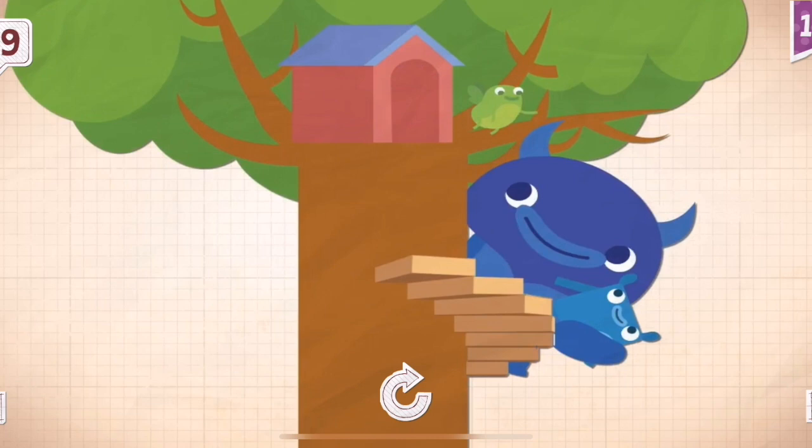Big Blue and Little Blue climbed the 39 steps to get to the front door of Sam's house.